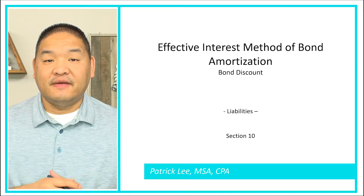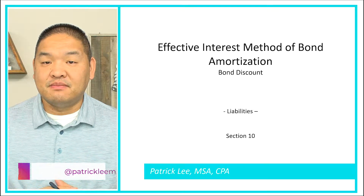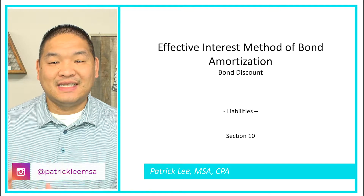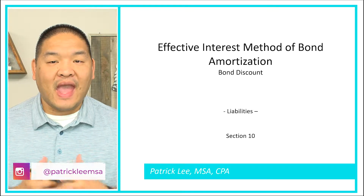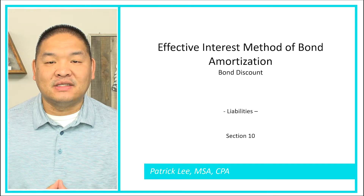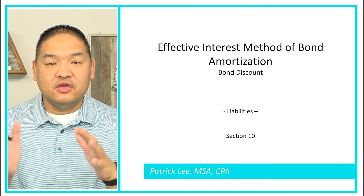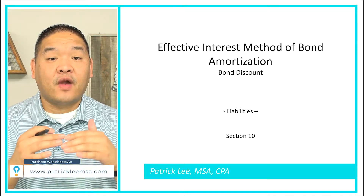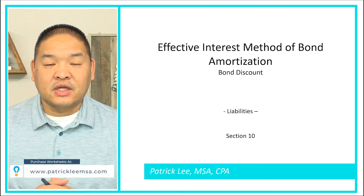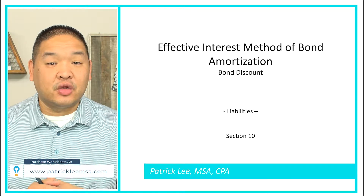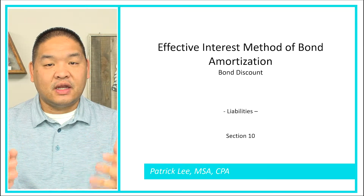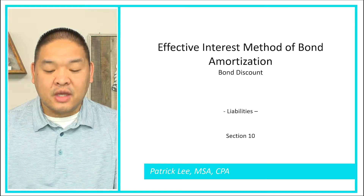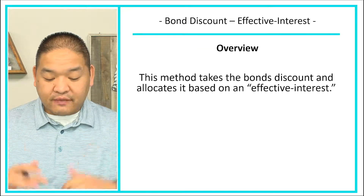In this lesson we're going to be looking at the effective interest method for a bond that was issued at a discount. We're going to look at how we amortize that discount over its useful life using the effective interest method, which is different from the straight-line method that we talked about in an earlier lesson. So let's get started.